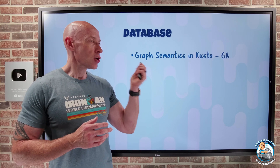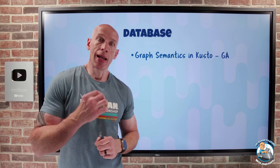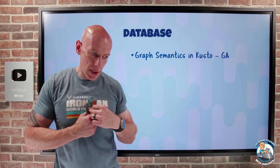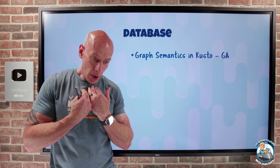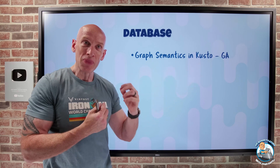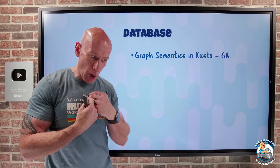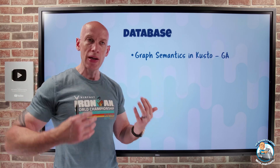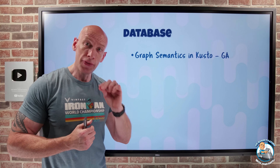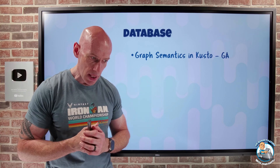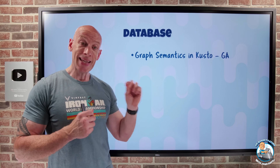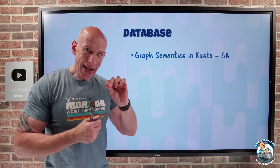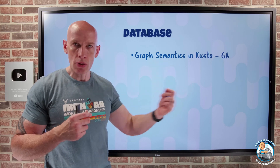On the database side, graph semantics in Kusto has gone GA. Graphs are all about relationships — various entities and the relationships between them. For example, John is a node, Julie is another node, and the relationship between them (Julie is John's boss) is an edge. For applications that focus on relationships, like Facebook, a graph database is ideal for quickly understanding those relationships. This lets me define a graph representation built on top of the regular Kusto structure, populated in memory, so I can run graph queries against it.